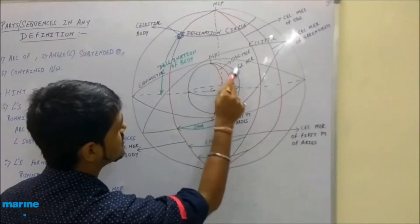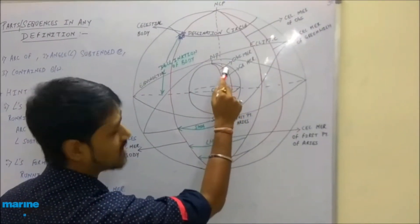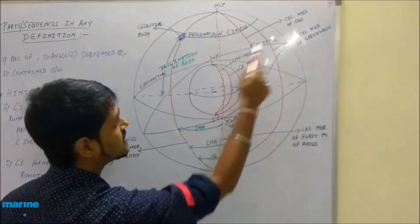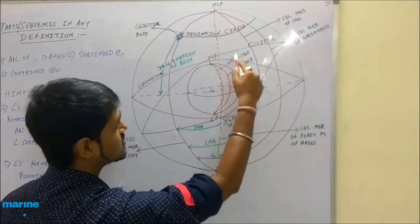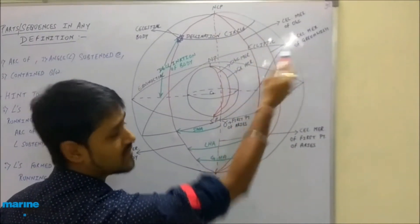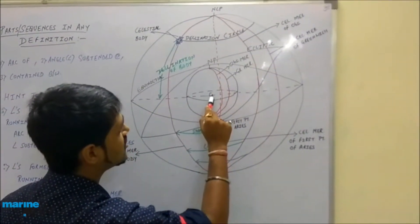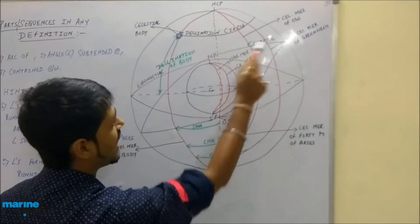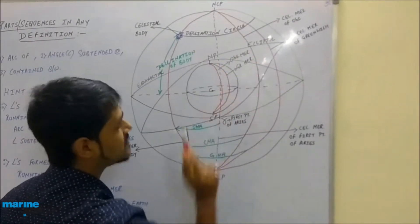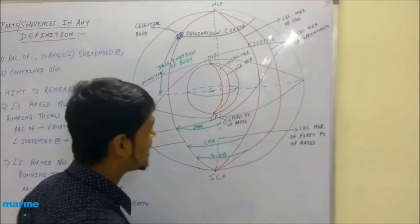As I mentioned, the celestial sphere is obtained by the surface expansion of the earth, hence the centre of the earth and the celestial sphere remains the same.